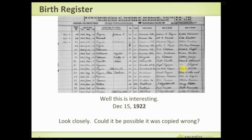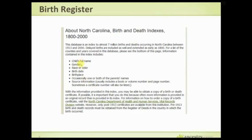What we really need to do is look more closely at this data collection. The description on Ancestry says: 'With the information provided in this index, you may be able to obtain a copy of a birth or death certificate. If possible, it is important that you do this, because often more information is provided in an original record than in the index.' This is not the original record. Some birth registers are the best source of truth we've got — this particular one is not.